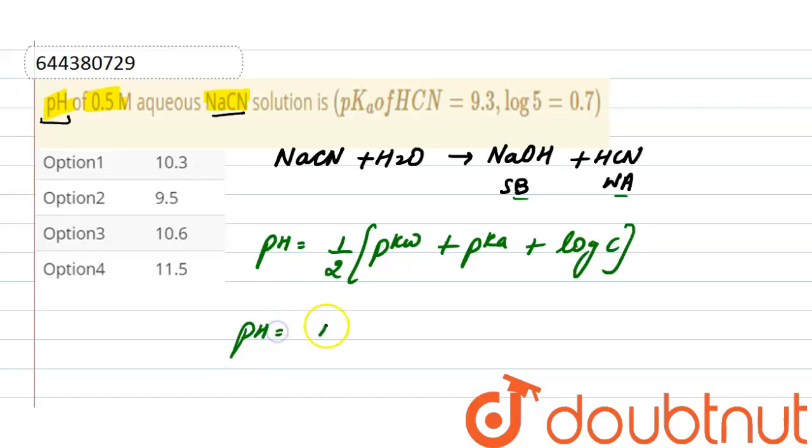pH is equals to half of pKw is 14, putting the values here. And after that, pH of this NaCN solution is 11.5, and the correct option here is option 4, in which the pH of this NaCN salt solution is 11.5.